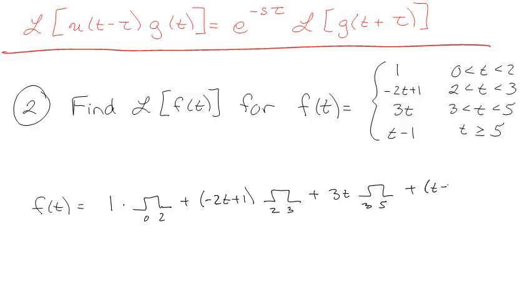And then we have 3t times a unit step top hat from 3 to 5. And then we have t minus 1 times a unit step starting at 5, going like that. And there's much more fancy pants ways to do this, but you know, get what you pay for.